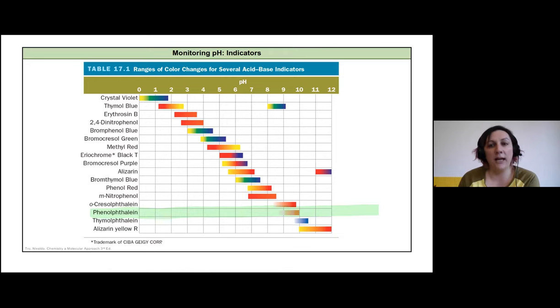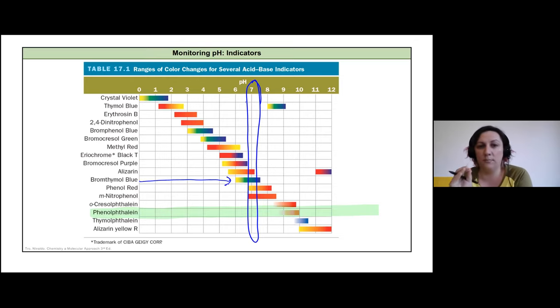For a strong acid and a strong base reacting, we expect to have a pH of about 7 at our equivalence point. Looking at this, I would come down and take a look at what's happening with my indicators around pH 7. If I was going to choose a perfect indicator for doing that titration, I would probably choose bromothymol blue. This is one where right when it goes from green to dark blue, that dark blue color would indicate a pH of 7.